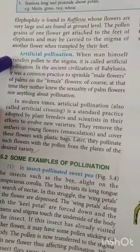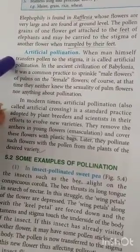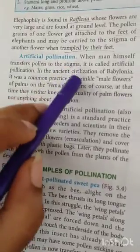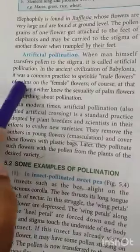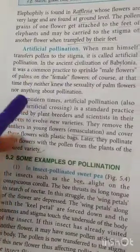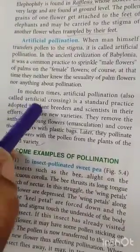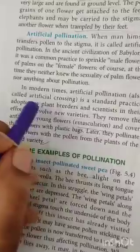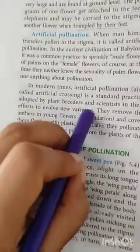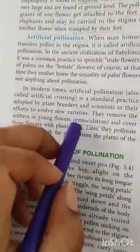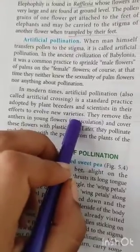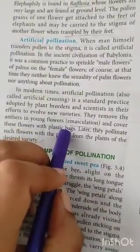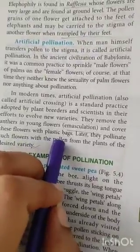Next we have artificial pollination, which is man-made pollination — man himself transfers pollen to the stigma. In ancient civilization it was common practice to sprinkle male flowers of palm on female flowers. In modern times, it is a standard practice adopted by plant breeders and scientists to create new varieties. They remove the anther from a young flower — a process known as emasculation — then cover the emasculated flower with a bag or polythene cover, a process called bagging. After this, desired pollens are taken and brushed onto the desired stigma.